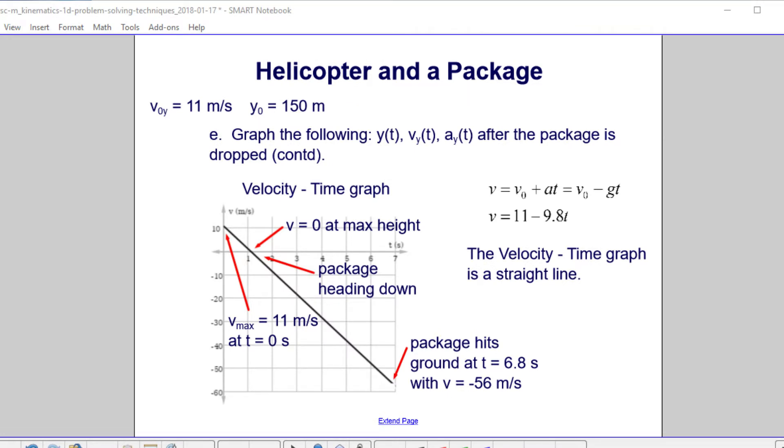To graph the velocity, we know that the velocity increases linearly in freefall. And as a matter of fact, here's our equation, v0 minus gt, where our initial velocity was 11, and g is negative 9.8. So we can just plot that. We know that the y-intercept for the velocity, or the velocity intercept, is 11 at time equals zero. So that's that point. We then know we have a slope of negative 9.8, which is how we can draw that line. Or we can just put a couple points.